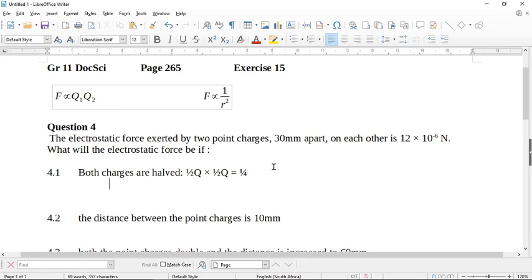So then you say what is a quarter of this value over here, and a quarter of this value will be a quarter of 12 is 3 times 10 to the power of negative 6, 10 to the negative 6 newtons. So there will be your final answer. So it's actually quite easy.